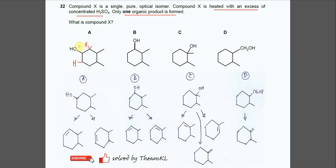So it means if the OH is removed with this hydrogen, it will form this alkene. If the OH is removed with this hydrogen, then it will form the second alkene. So this compound or the answer in A will produce two organic products. So it's not the answer.